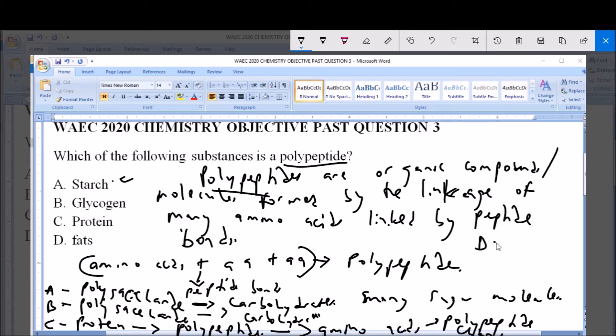And then D, which is fat. Fat is basically just solid lipids of animal origin. So that is not linked or that is not connected to polypeptides.